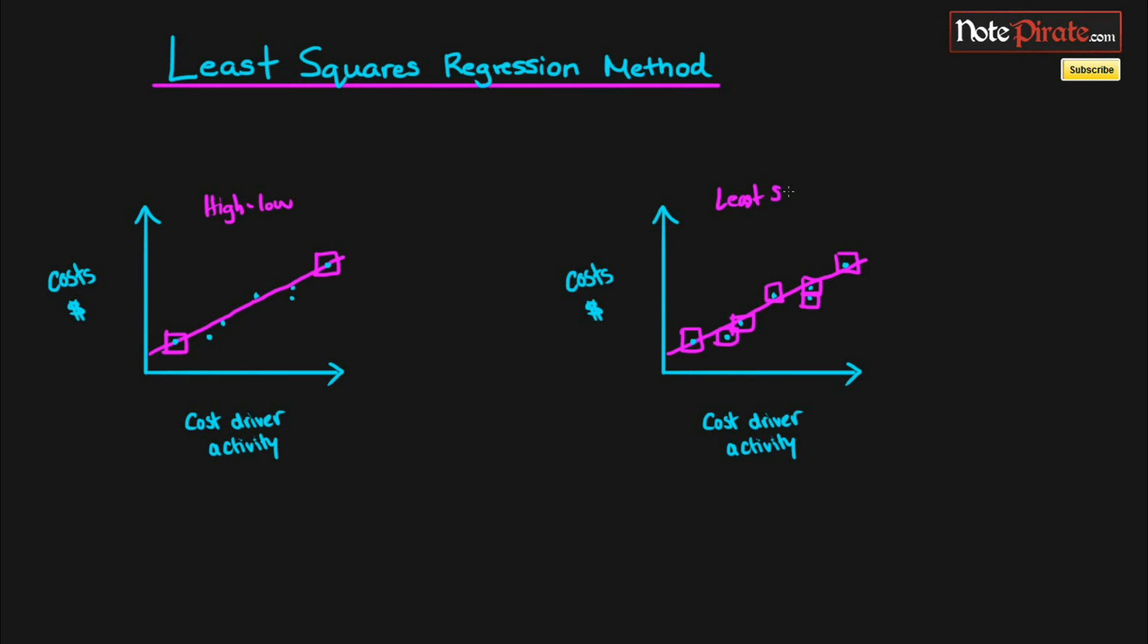The least squares method, since it's using all the different data points, is going to create a more reliable cost function to project costs since we're using all of the historical data points.